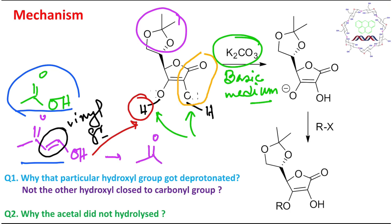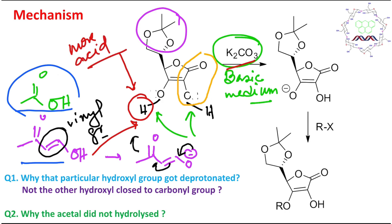After deprotonation, the vinylogous acid has a conjugate base with a canonical form: the double bond shifts and an O⁻ is formed, which is stabilized by resonance. Because of this resonance stabilization, this proton is more acidic. So in the presence of a milder base like K₂CO₃, it will get deprotonated preferentially. The medium — DMSO and THF — both contain oxygen atoms capable of stabilizing cations like K⁺.